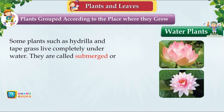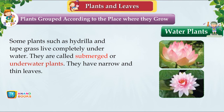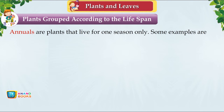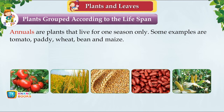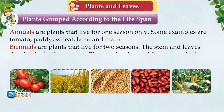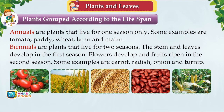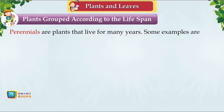Plants grouped by life span: Annuals live for one season only — tomato, paddy, wheat, bean and maize. Biennials live for two seasons — the stem and leaves develop in the first season, flowers and fruits in the second; examples: carrot, radish, onion and turnip. Perennials live for many years — neem, banyan, eucalyptus, mango and coconut.